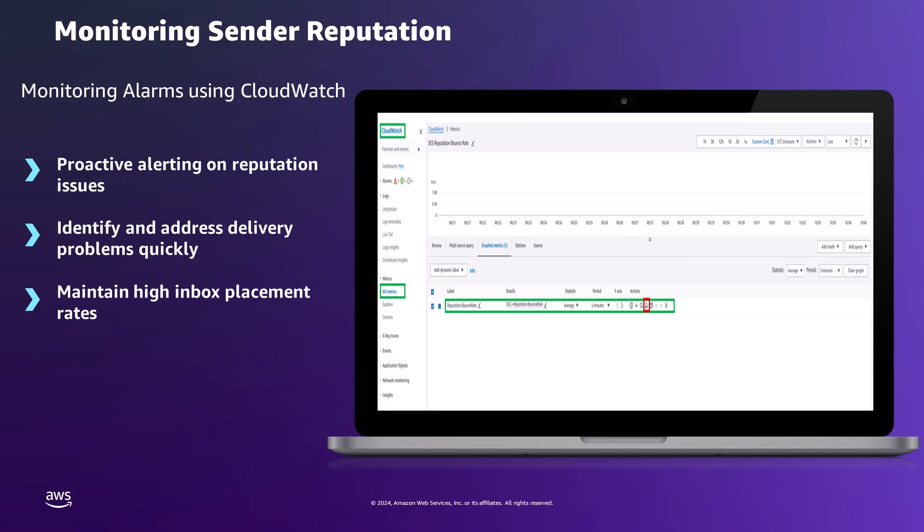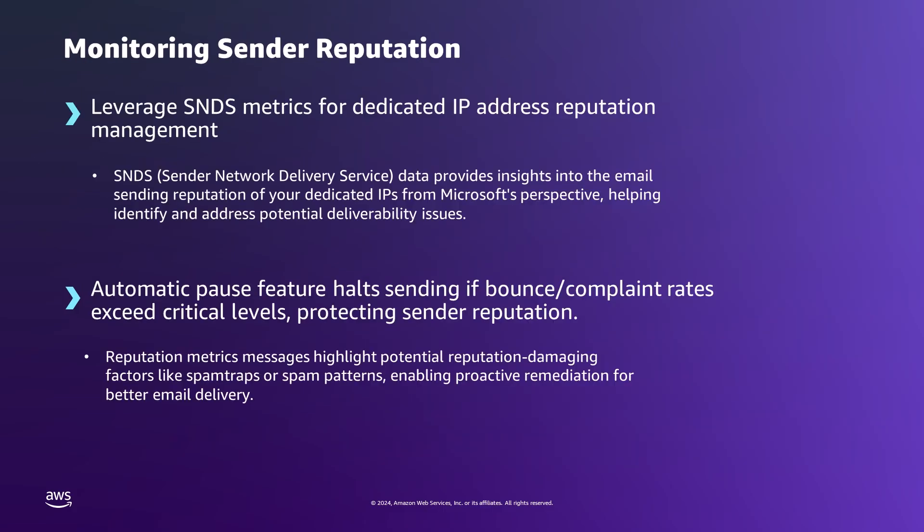CloudWatch allows for the creation of custom alarms based on SES metrics. Users can set thresholds for various parameters such as high bounce rates, increased complaints, or approaching sending quota limits. When these thresholds are met or exceeded, CloudWatch can trigger notifications, enabling proactive management of email sending reputation. This capability empowers users to stay ahead of potential issues, ensuring optimal email deliverability and maintaining a healthy sender reputation.